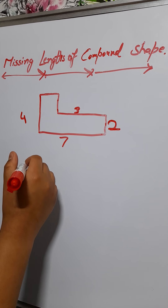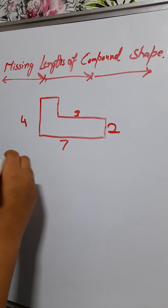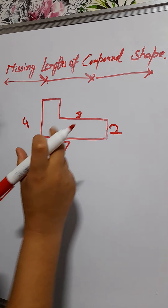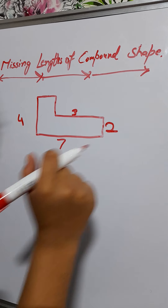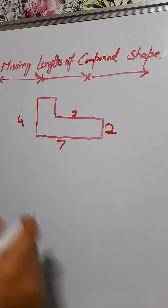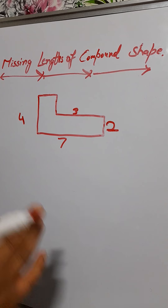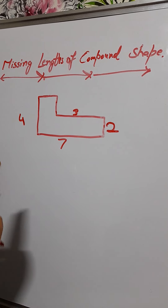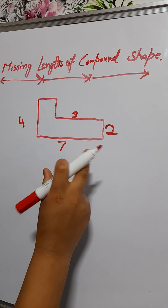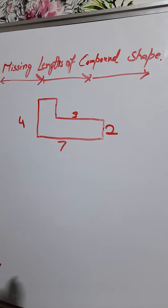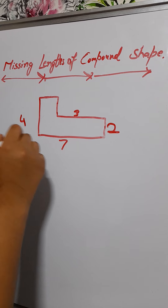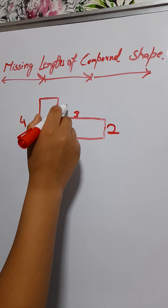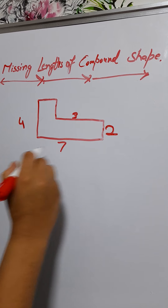Hello and welcome back to my channel. Today we'll learn about the missing lengths of compound shapes. A compound shape is two shapes that are mixed together. As you can see, this is a compound shape with the lengths and widths laid out.